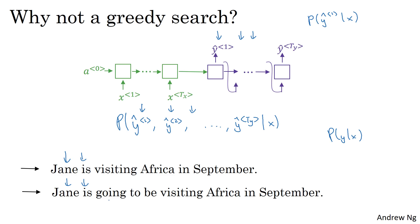But if the algorithm has picked Jane is as the first two words, because going is a more common English word, probably the chance of Jane is going given the French input, this might actually be higher than the chance of Jane is visiting, given the input sentence, the input French sentence. And so it's quite possible that if you just pick the third word, based on whatever maximizes the probability of just the first three words, you end up choosing option number two. But this ultimately ends up resulting in a less optimal sentence, in a less good sentence as measured by this model for P of Y given X.